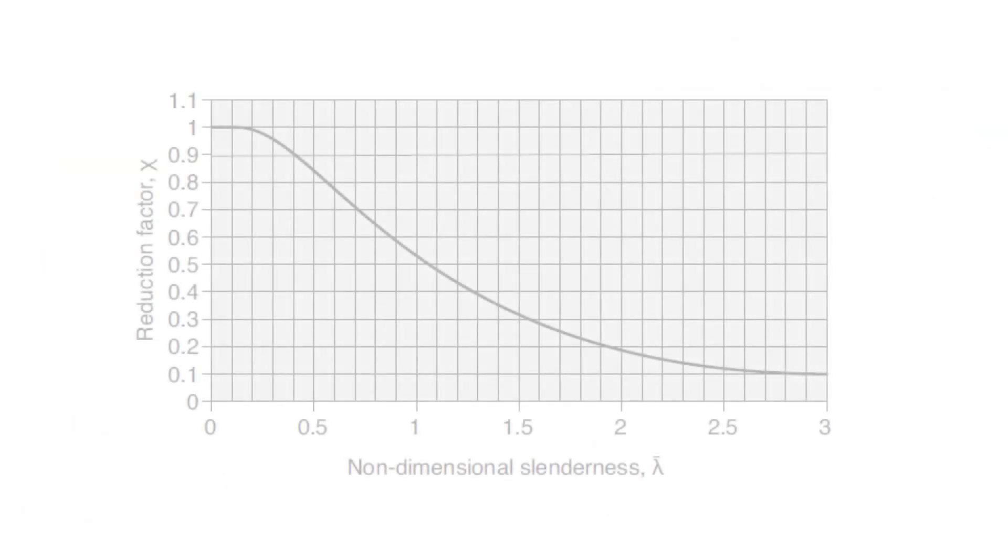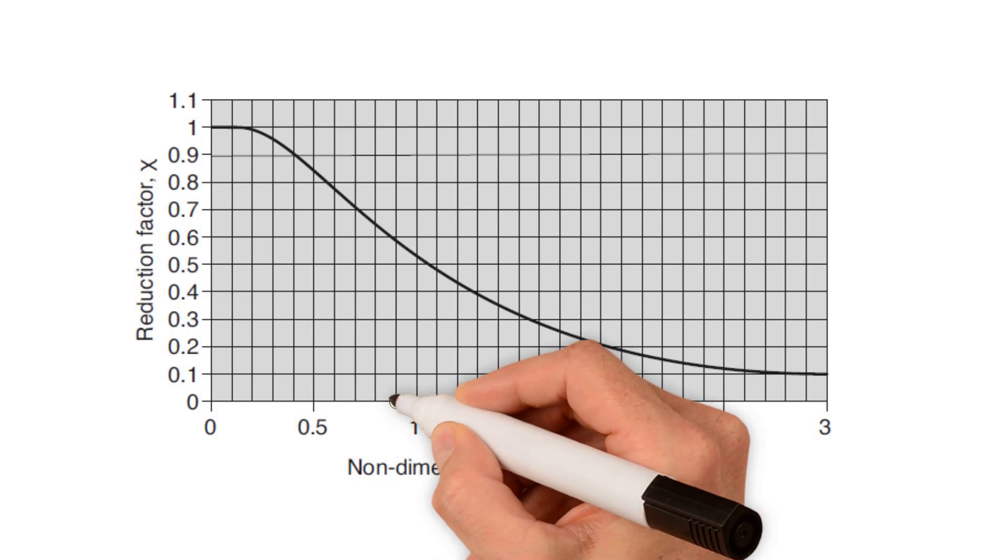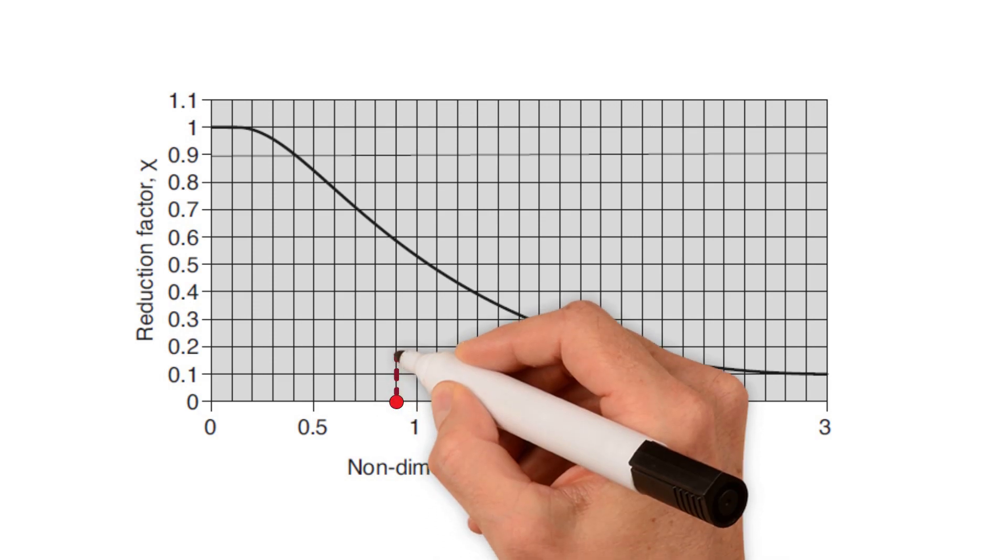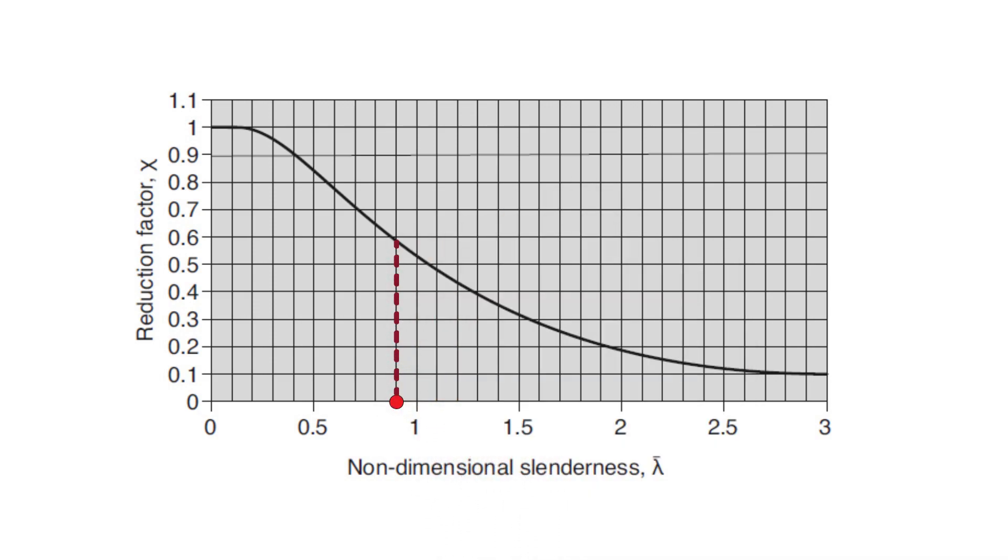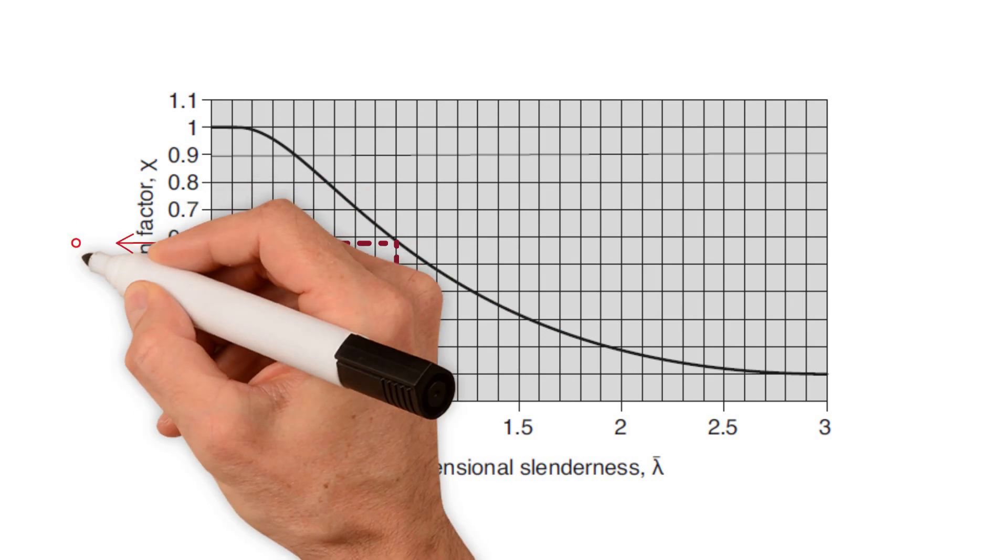From the design curve, we should be able to obtain the reduction factor as we get a non-dimensional slenderness of 0.9. If we extend the line to meet at this point with the curve, this gives us an approximate figure of reduction factor chi which equals 0.58.